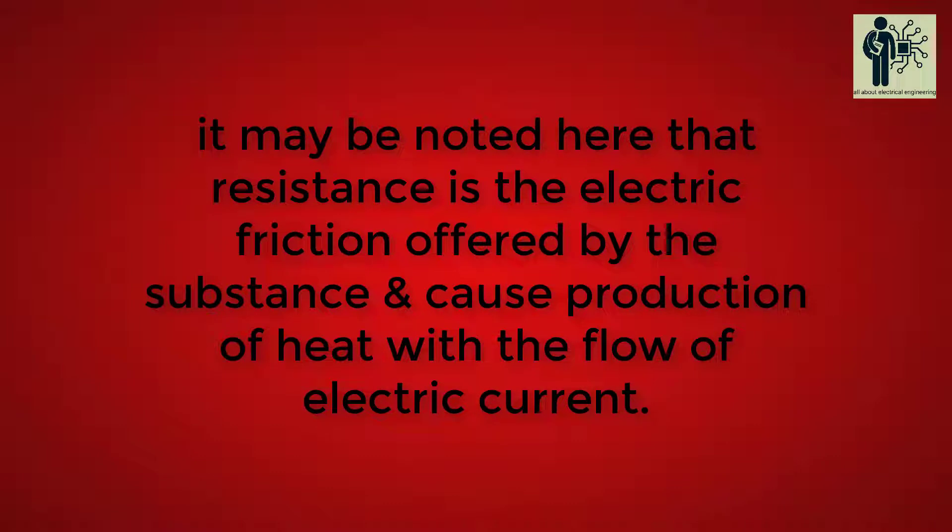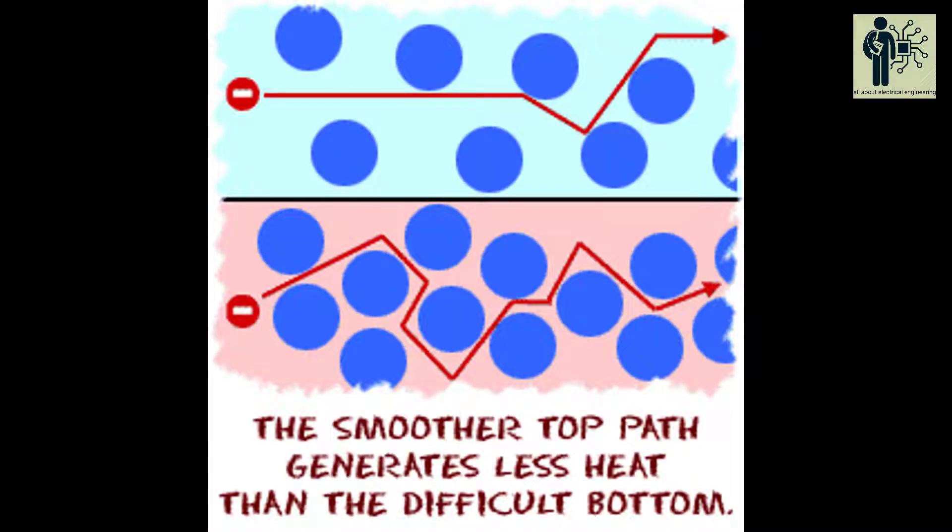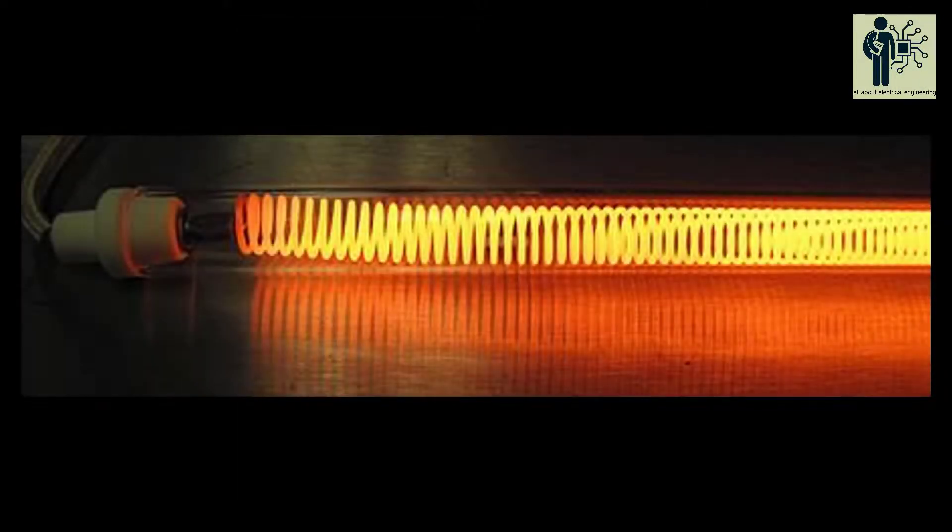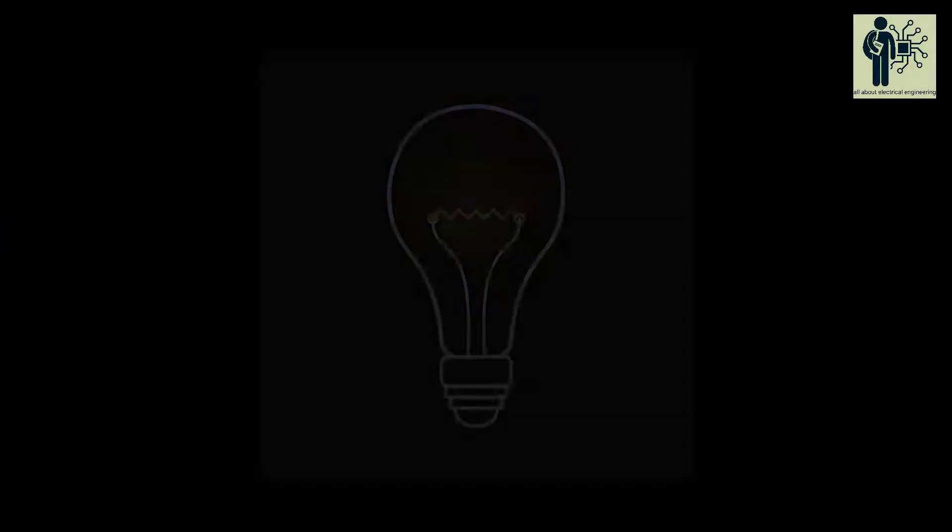It may be noted here that resistance is the electric friction offered by the substance and causes production of heat with the flow of electric current. The moving electrons collide with atoms or molecules of the substance and each collision results in the liberation of minute quantity of heat. This technology is used to make incandescent lamps.